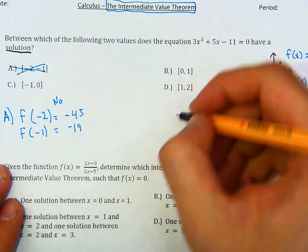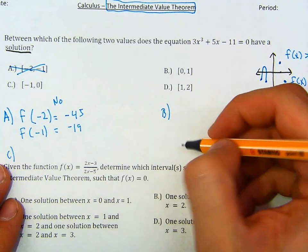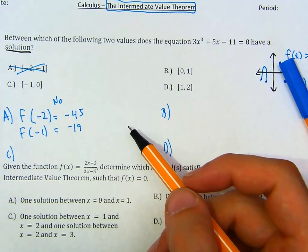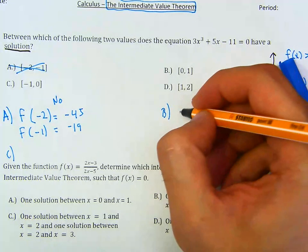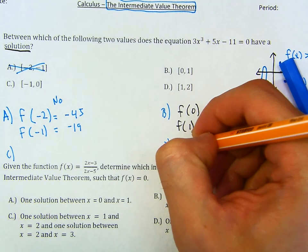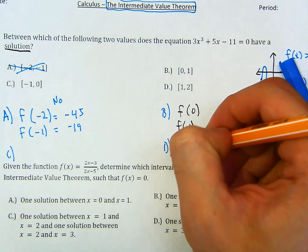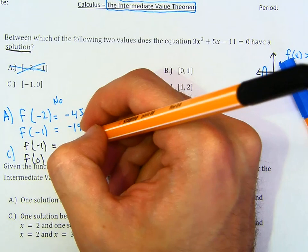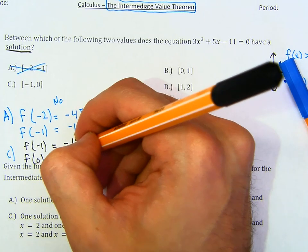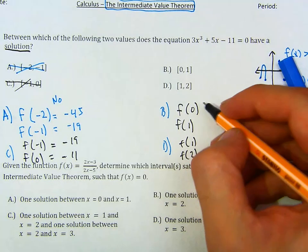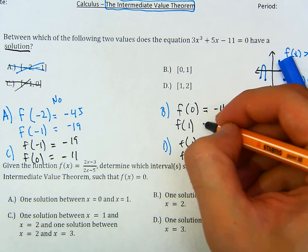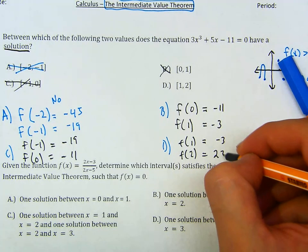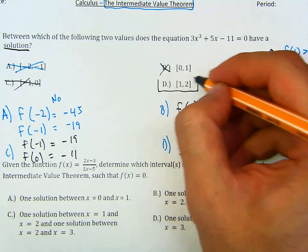It guarantees a root if one of them is positive and one of them is negative. That's what you have to do for this question — find which interval gives you a positive and negative y value. So, f of negative 1 was negative 19, f of 0 is negative 11 — both negative, so that doesn't work. f of 0 is negative 11, f of 1 is negative 3 — both negative, doesn't work. So it has to be the last option, where one value is negative and the other is positive. Letter D is the correct answer.